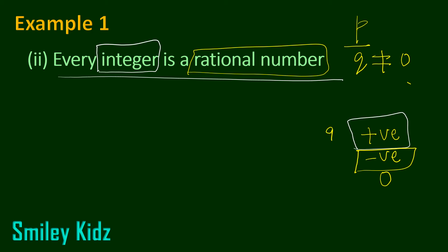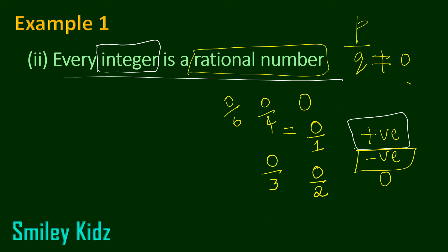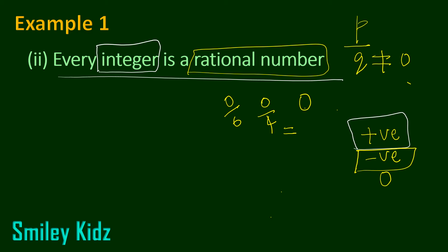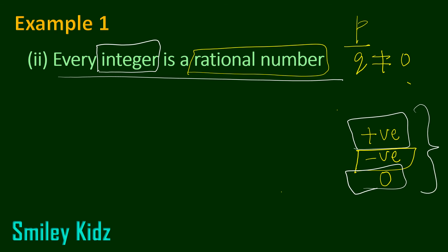Then, what about 0? Can 0 be expressed in the form of P by Q? Is 0 a rational number? We have 0, and 0 can be written as 0 by 1 in the form of P by Q, and yes it is a rational number. It can also be written as 0 by 2, 0 by 3, 0 by 4, 0 by 6 — all equal 0. So 0 can be expressed in the form of P by Q as well, and the whole collection has accepted it.